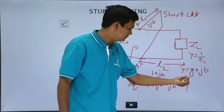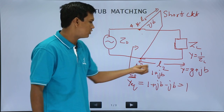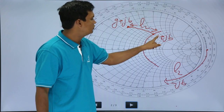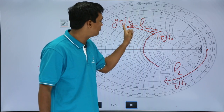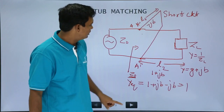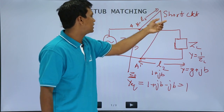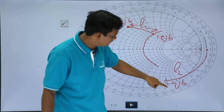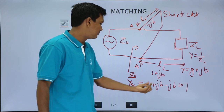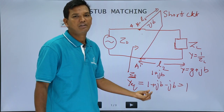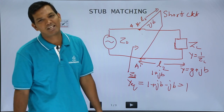To recap: we take the admittance at the load, which is g + jb. We travel a distance L2 on the Smith chart until we hit the constant resistance circle of 1, at which point the value becomes 1 + jb. Then for the short circuit stub, travelling distance L2 from its end gives −jb. Adding at the junction gives normalized admittance 1, so the full impedance is Z₀, and maximum power is transferred.